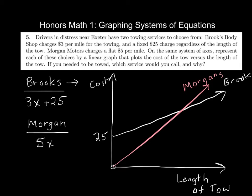The main idea here is, which is a better service? Well, hopefully, you get by looking at our graph here and the situation that because Brooks has a flat rate, if we travel 0, Morgans is cheaper because Morgans doesn't have a flat fixed rate. If you travel like 0 miles, if it's just right there, then Brooks is going to charge you $25 and Morgans is going to charge you nothing. So the question is, where do they intersect?